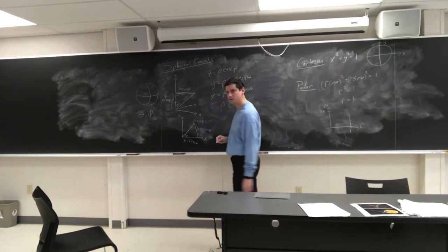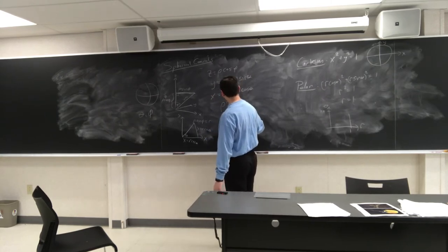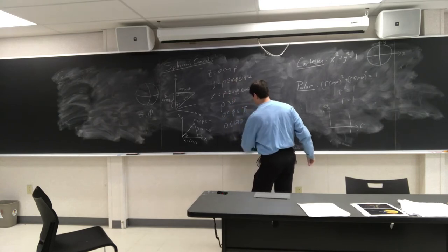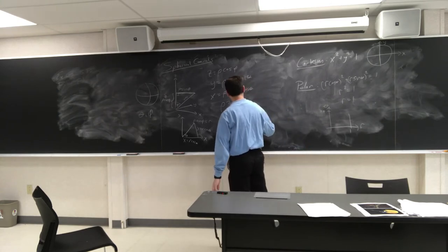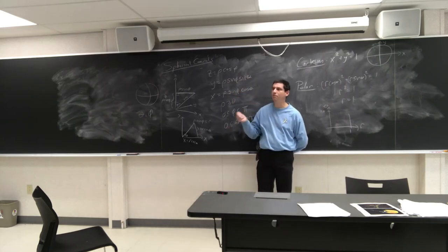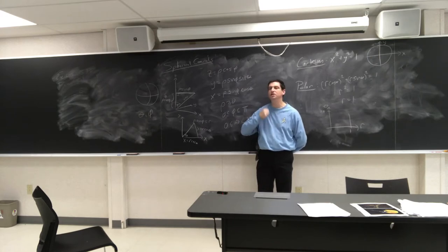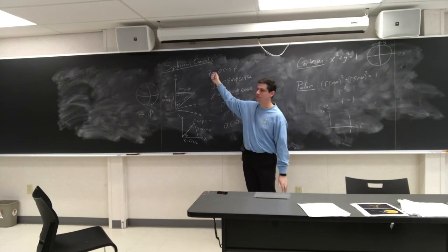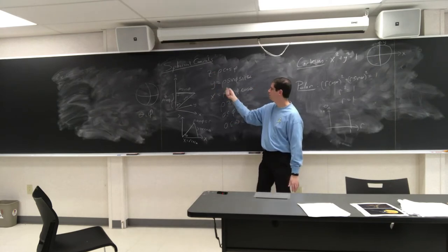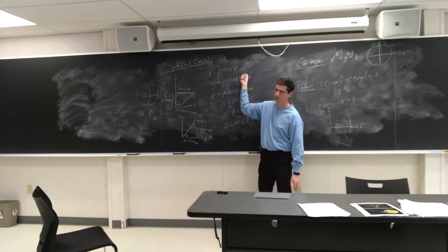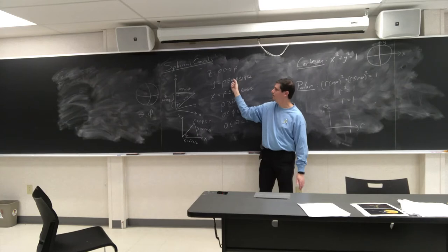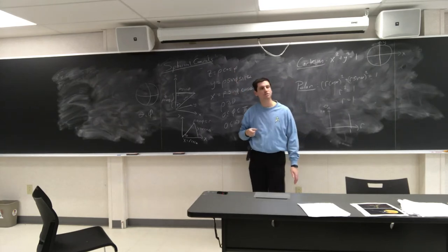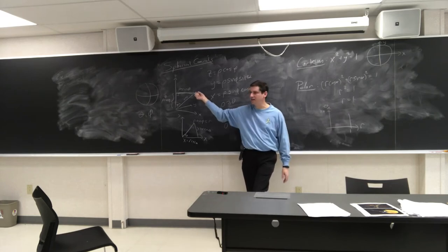So: z is rho cosine phi, y is rho sine phi sine theta, x is rho sine phi cosine theta. Rho is greater than or equal to zero, phi is between zero and pi, and theta is between zero and two pi. If you compute x squared plus y squared plus z squared, you get rho squared — cosine squared plus sine squared is one, sine squared plus cosine squared is one. This confirms x squared plus y squared plus z squared equals rho squared.